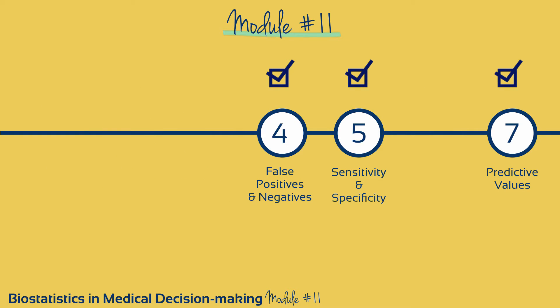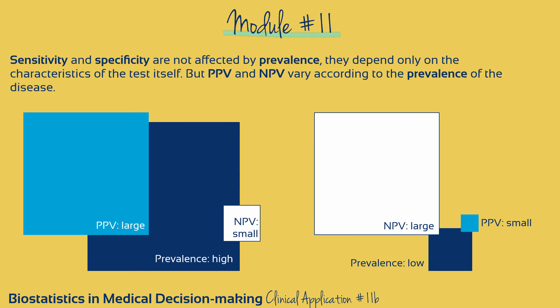In particular, sensitivity and specificity, false positives and negatives, and predictive values. We've also looked at how negative and positive predictive values vary according to the prevalence of the disease in question, which makes for an extra layer of consideration when interpreting test results.